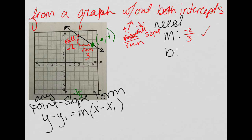So my point, I can label as x1, y1, and I'm ready to fill out point-slope form. So y minus my y value from the point, 4, equals my slope of negative 2 thirds times (x minus my x value from the point of 6). This would be point-slope form.